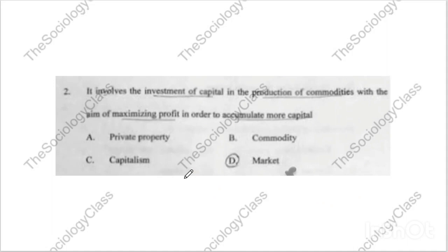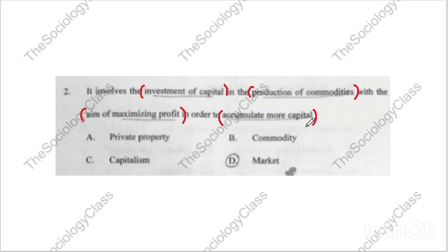Question number two: 'It involves the investment of capital in the production of commodities with the aim of maximizing profit in order to accumulate more capital.' Look at the keywords: investment of capital, production of commodities, maximizing profit, accumulate more capital. The options are private property, commodity, capitalism, or market. The correct answer is capitalism.